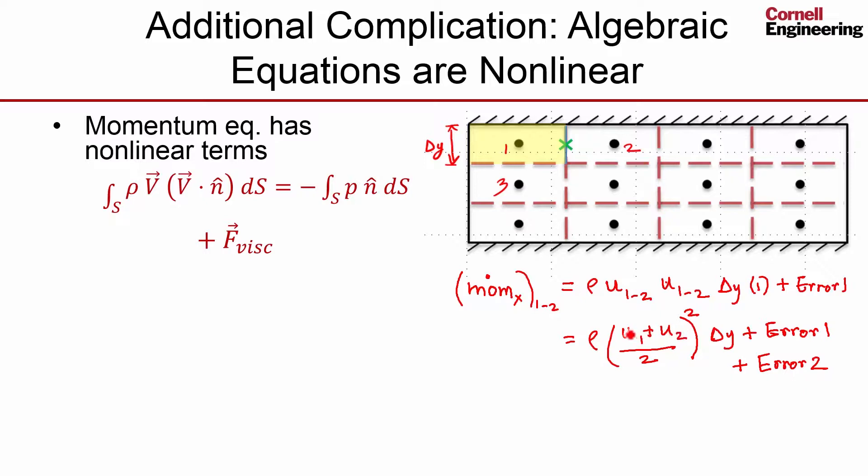And when we square that out, the kinds of nonlinear terms we are going to get—so we're going to get u1 squared, so the nonlinear terms we'll get in the algebraic equation: we'll have a u1 squared term, we will have a u2 squared term, and we will have a cross product, u1 u2. All of these are nonlinear terms.